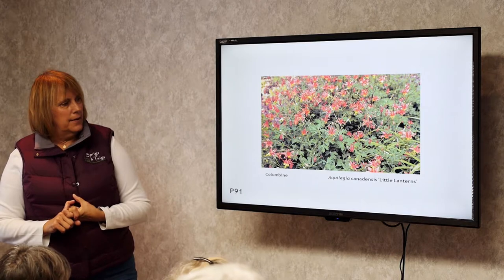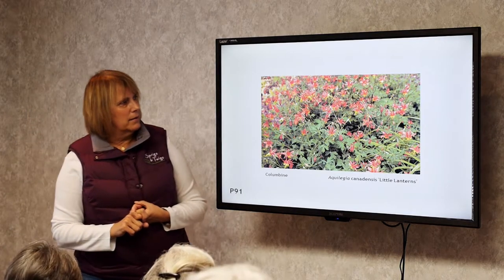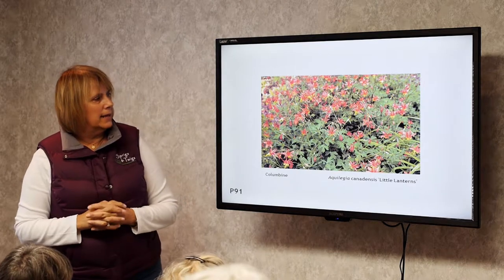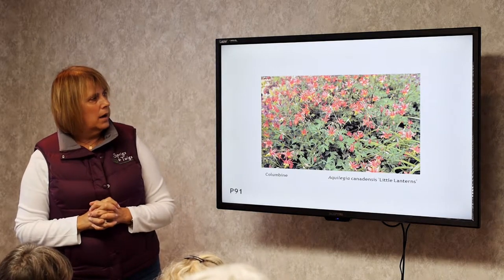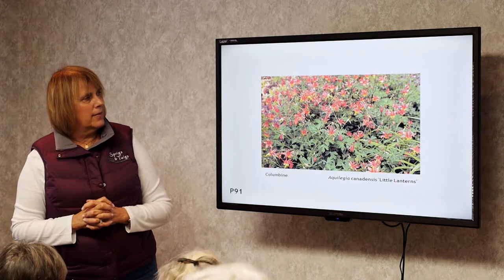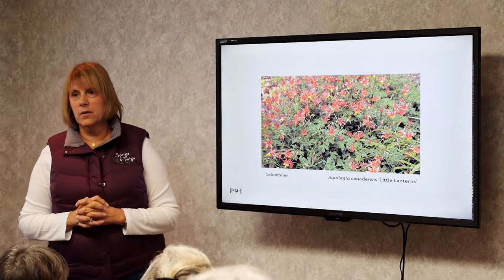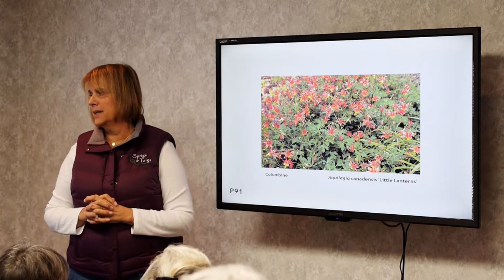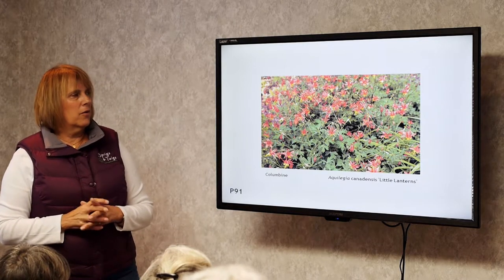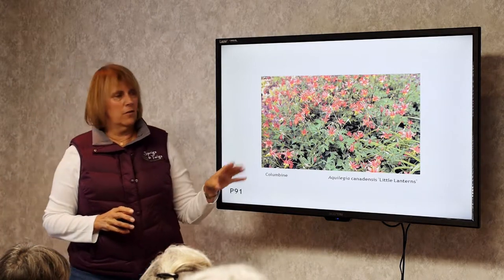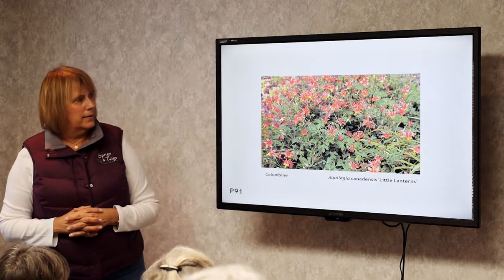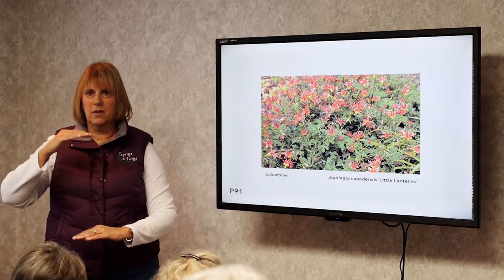Columbine. This is the native Columbine — a little bit shorter, maybe about that tall with red and yellow flowers on it. This is one of the first plants hummingbirds come to when they return from the south in springtime. There are all kinds of colors — purples, whites, yellows, and pinks — and all different height sizes too.